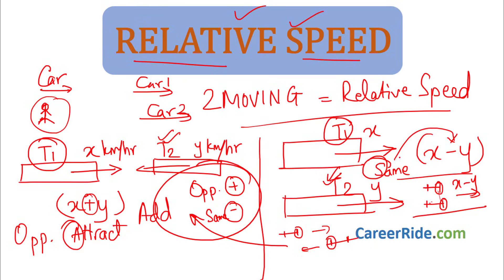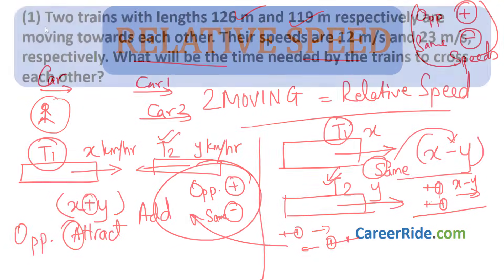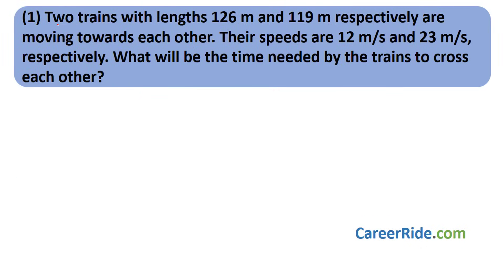This is the only thing you need to remember regarding relative speed. Whenever trains are in opposite directions, add the speeds. Whenever trains are in the same direction, subtract the speeds. Now let's move on to sums and see how to tackle them. Question number one: two trains with lengths 126 meters and 119 meters respectively are moving towards each other.